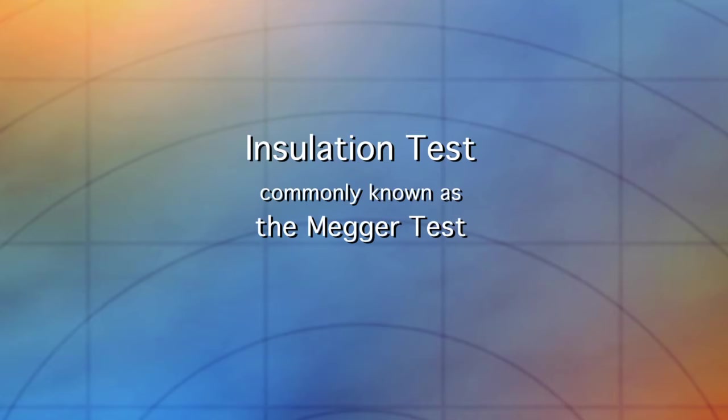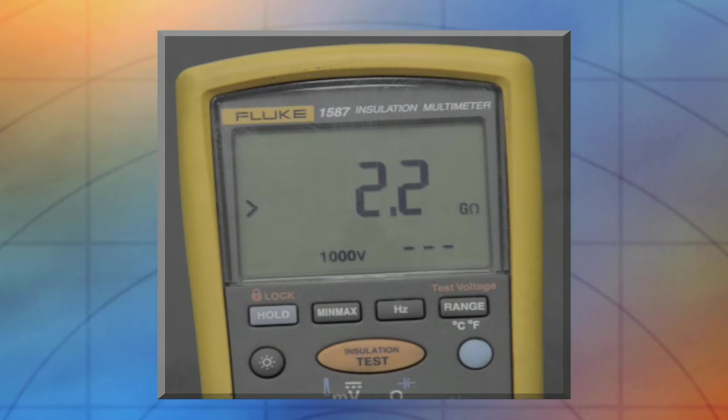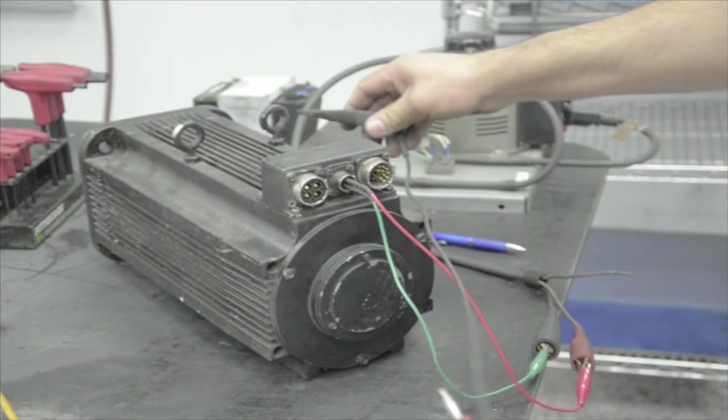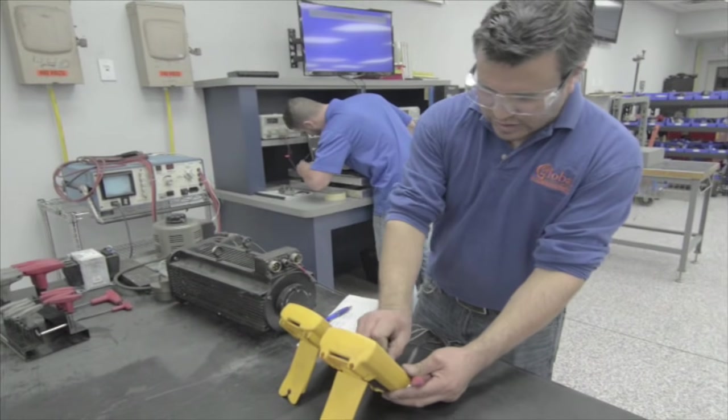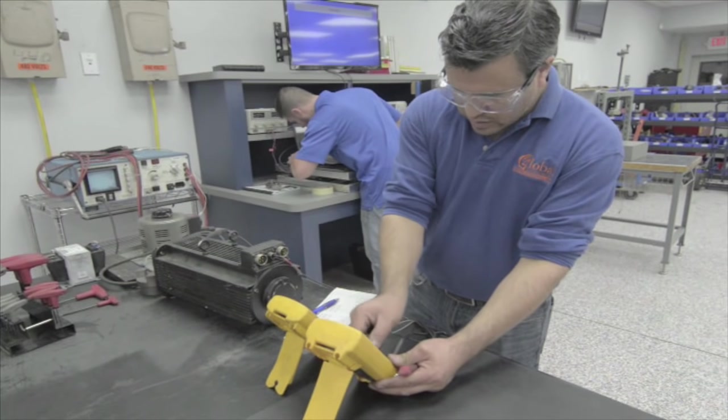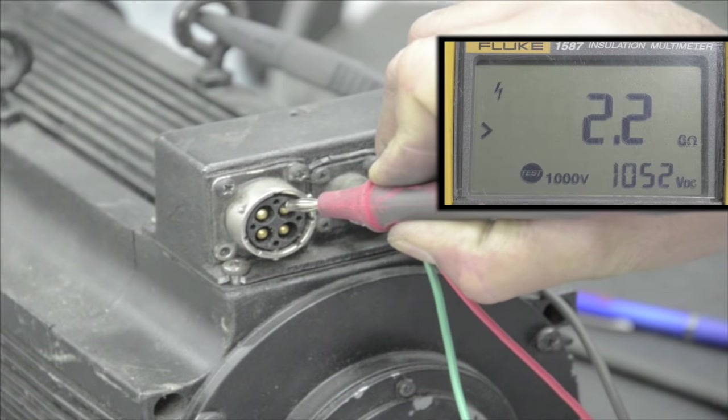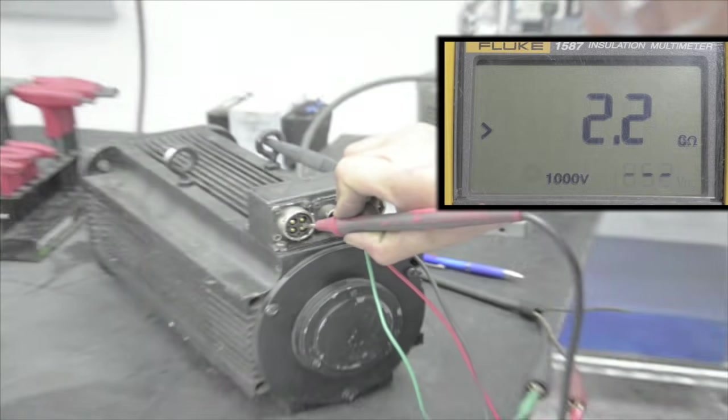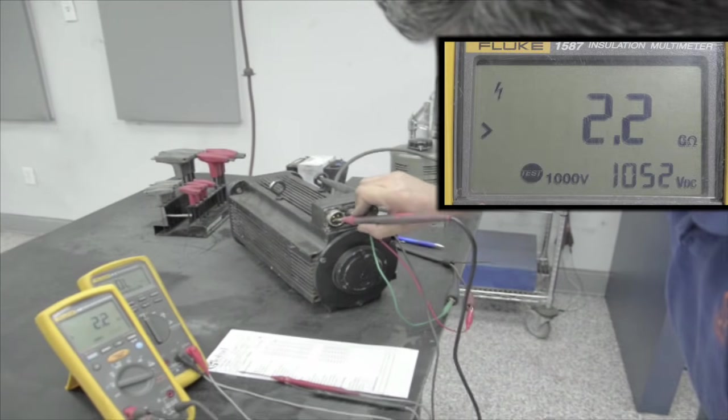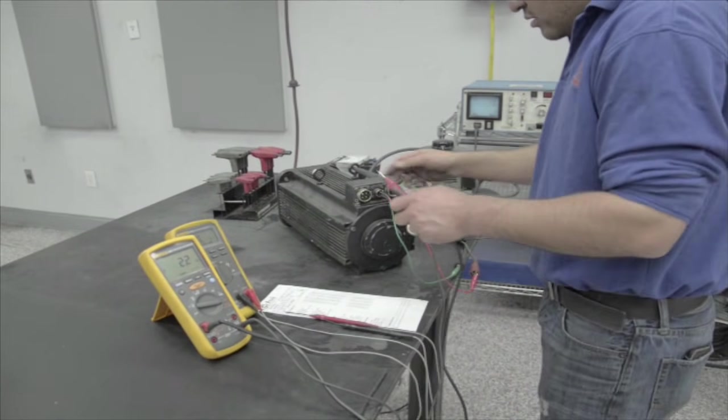Now an insulation test, commonly known as a MEGAR test, using an insulation multimeter is being performed. We first connect one lead to ground and check through each phase to ensure that the windings are not grounded or that the insulation is not broken down. Phase one, 2.2. Phase two, 2.2. Phase three, 2.2. All phases read 2.2 on the meter, which is excellent.